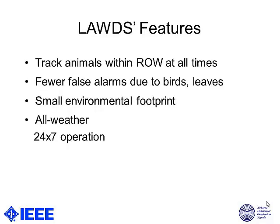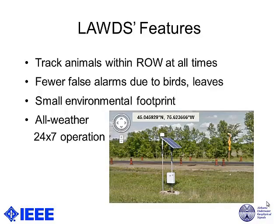Our system is called LAWDS, which stands for Large Animal Warning and Detection System — the name is a bit of a misnomer but we will not get into that. Its features include the ability to track animals within the right of way at all times. It generates fewer false alarms due to flying birds, falling debris, and precipitation. Because we use a radar and don't need to do a lot of clearing in installed areas, it has a very small environmental footprint and is capable of all-weather operations.